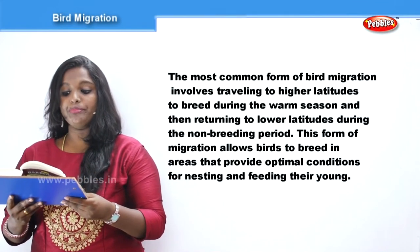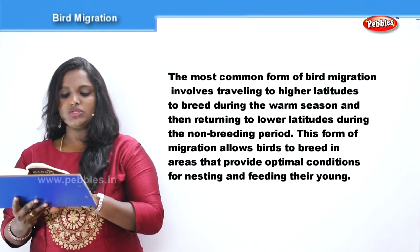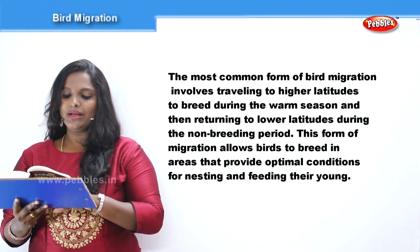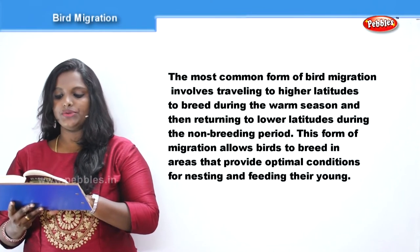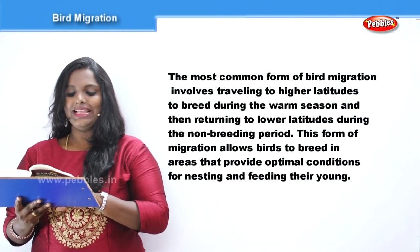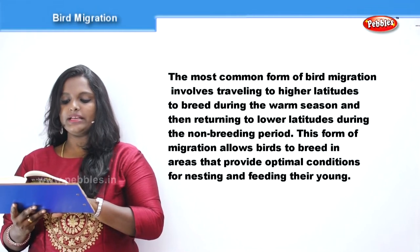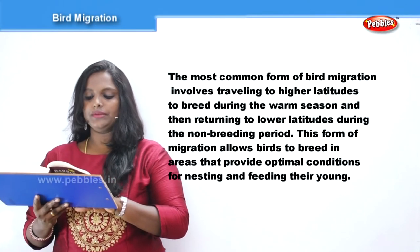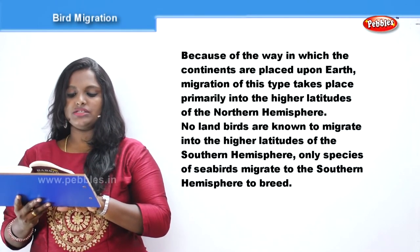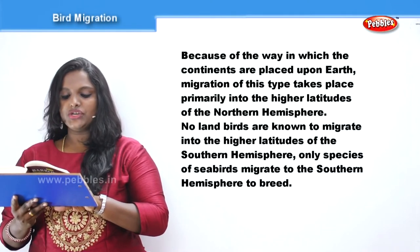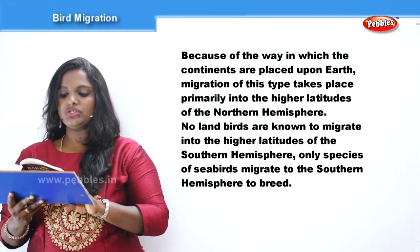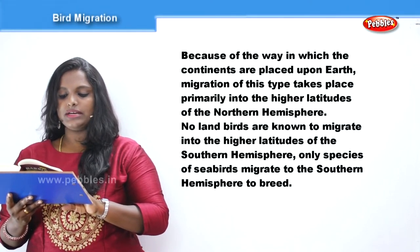The most common form of bird migration involves travelling to higher latitudes to breed during the warm season and then returning to lower latitudes during the non-breeding period. This allows birds to breed in areas that provide optimal conditions for nesting and feeding their young. Because of the way in which the continents are placed upon the earth, migration of this type takes place primarily into the higher latitudes of the northern hemisphere. No land birds are known to migrate into the higher latitudes of the southern hemisphere.